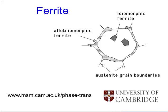Today I am going to talk about reconstructive transformations, beginning with the ferrite transformation which happens at the highest temperature when you cool austenite below the A3 temperature. There are two kinds of ferrite that we will discuss: one is called allotriomorphic ferrite.